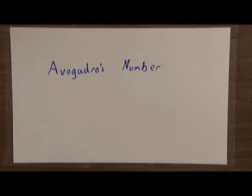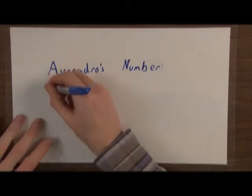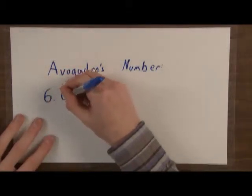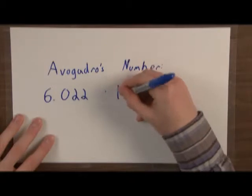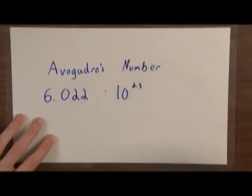When you ask most students in Chemistry 1 and 2 what the mole is, they say Avogadro's number, but they don't really have a concept of what that means — they don't put the units behind it. So Avogadro's number, for our purposes, is equal to 6.022 times 10 to the 23rd power.